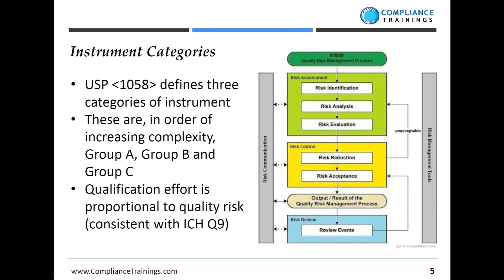The theory is that the less complex an instrument is, the lower the quality risk it poses. Group A is the simplest sort of laboratory instrument; group C is the most complex. The validation activity appropriate to those quality groups varies in terms of complexity. On the right-hand side of this slide I've shown an extract from ICH Q9, which deals with quality risk management. There's an awful lot of what we do these days in the pharmaceutical industry that takes a risk-based approach, so familiarity with this guidance would be incredibly useful.